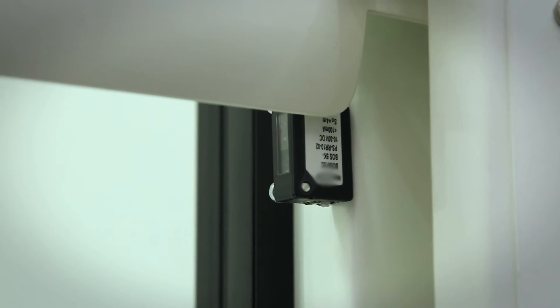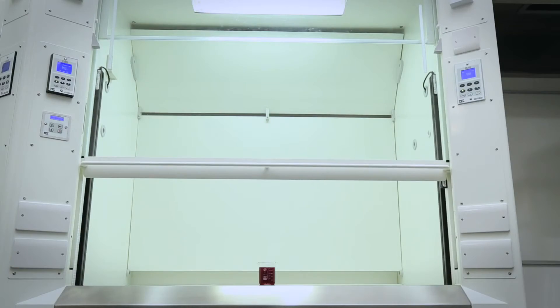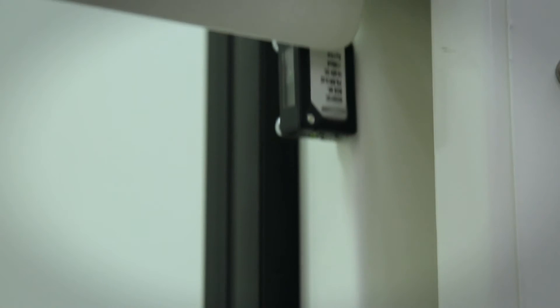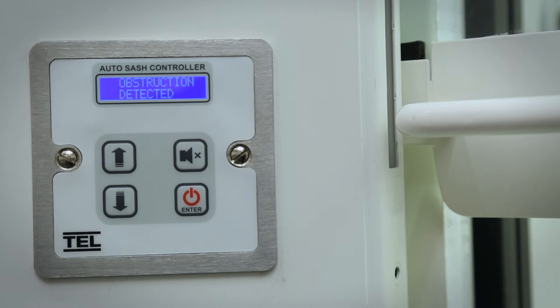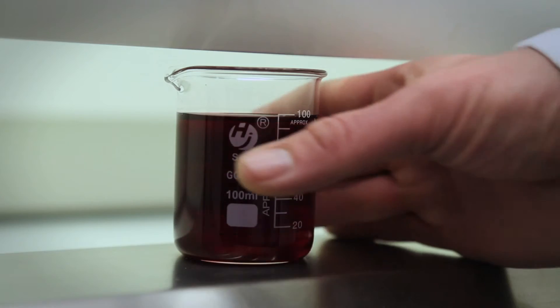The under sash sensor creates a single beam underneath the sash handle. If at any point during the closing sequence this beam is broken, the auto sash drive will be disabled and will give audible and visual alarms. Once removed, the auto sash will automatically reset.